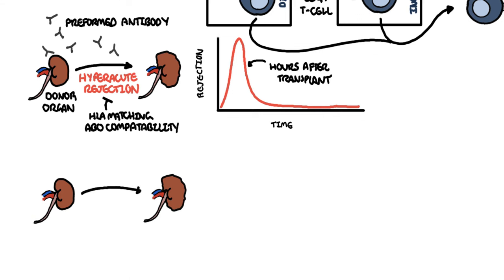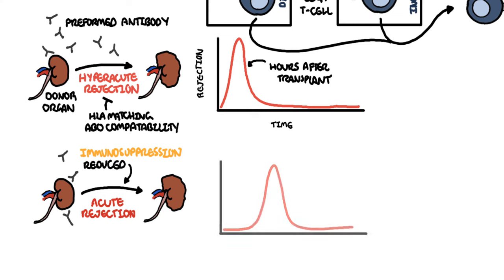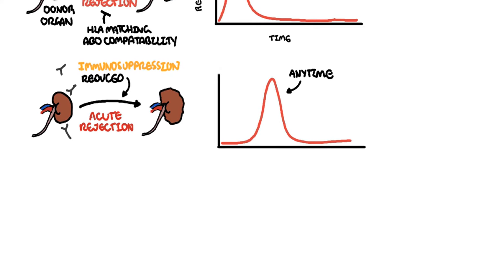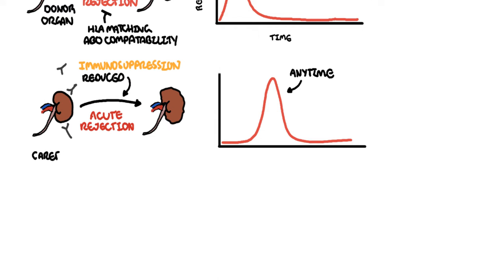Acute rejection usually occurs when the immunosuppressive agent someone is taking is reduced. The immunosuppressive agent is unable to withhold or stop the host's immune system from attacking it, and as a result acute rejection occurs. Acute rejection can occur at any time during the transplant period and can be days to weeks. To prevent acute rejection, careful immunosuppression tapering and dose adjustment is required.